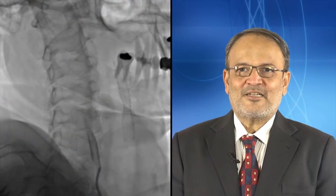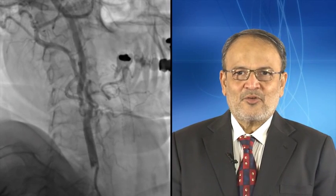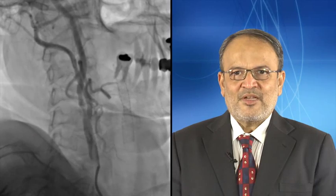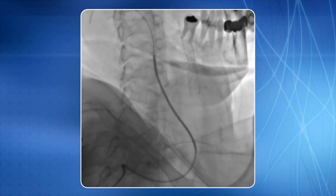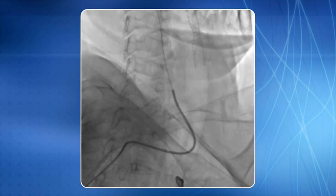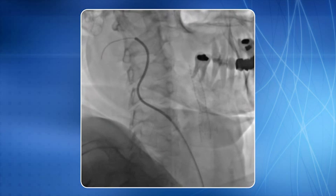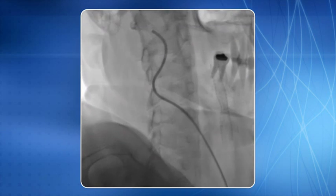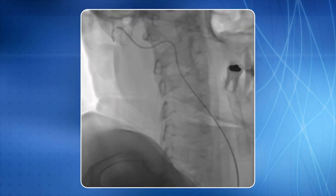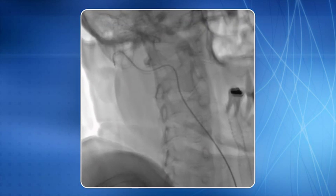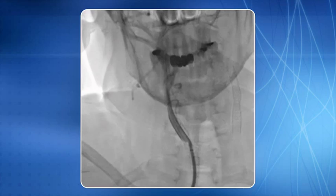This is another case of right internal carotid artery stenting using the right transradial approach. You can see that the patient has already undergone left internal carotid artery stenting before. The lesion is profiled with a Simon 1 catheter. Over a 0.035 inch Terumo hydrophilic wire, the Simon 1 catheter was negotiated and its tip placed deep inside the right external carotid artery. The hydrophilic wire was then replaced by a 0.035 inch super stiff wire, which is seen in situ. A 6F pinnacle sheath was negotiated and its tip kept in the right common carotid artery below the lesion.